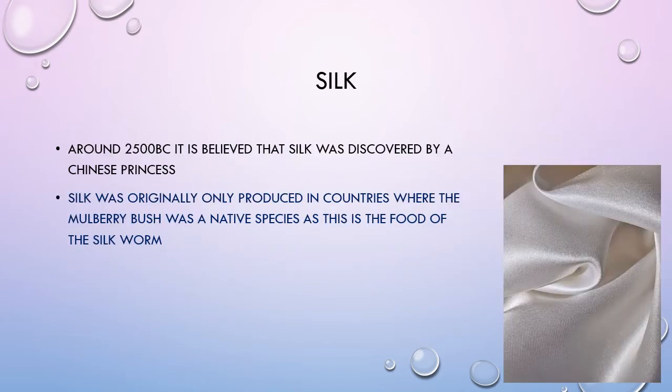Our final natural fibre is silk. Around 2500 BC it's believed that silk was discovered by a Chinese princess. Silk comes from the silk worm and was originally only produced in countries where the mulberry bush was a native species, as this is the food of the silk worm.